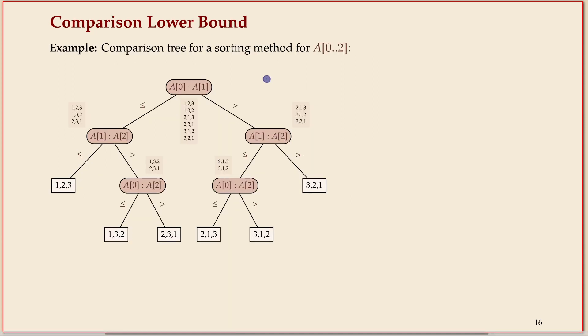So this is for a very small array, for three elements, one possible algorithm in this comparison model. How does the algorithm work? It starts by comparing the first two elements, position zero and one. What I denoted below the nodes is the possible orderings of the input that are still feasible or compatible with where we currently are.